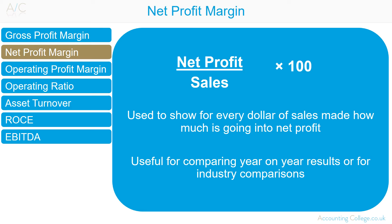In simplest terms, the higher a company's net profit margin, the better. The questions to ask here are: are the changes in net profit margin in line with the changes in gross profit margin? Are the changes in net profit margin in line with the changes in sales revenue?